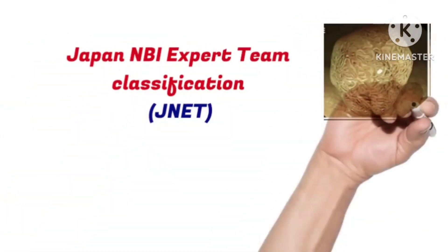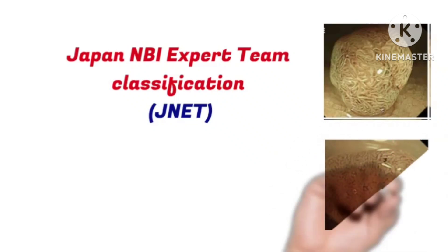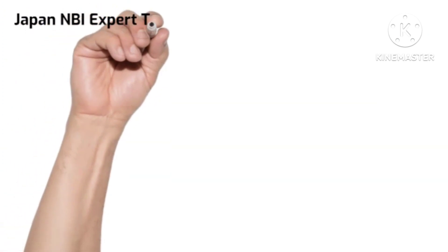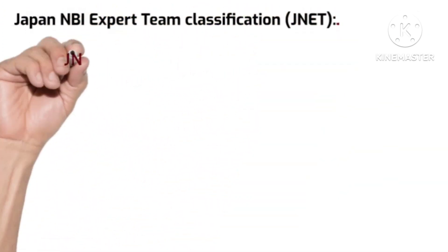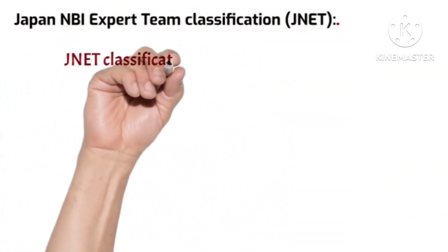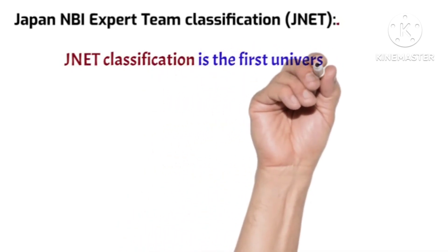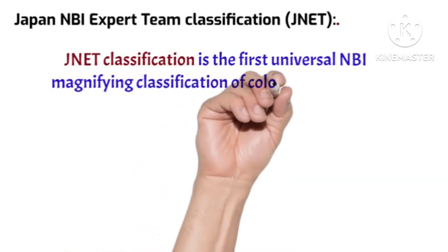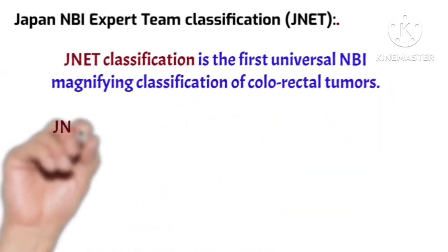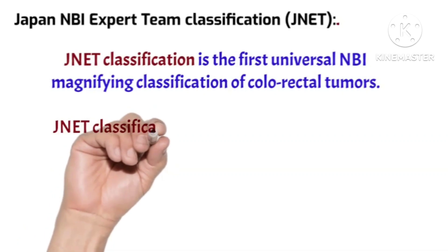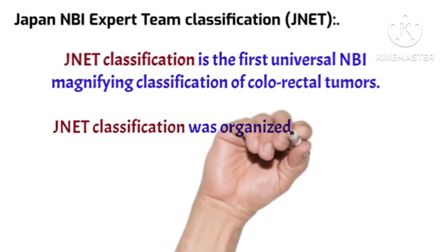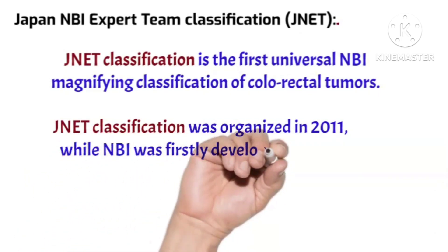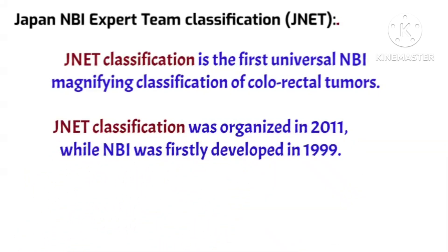In this video, we will simplify the Japan NBI Expert Team (JNET) classification. JNET classification is the first universal narrow band imaging magnifying classification of colorectal tumors. JNET classification was organized in 2011, while narrow band imaging was first developed in 1999.